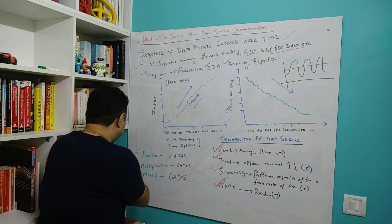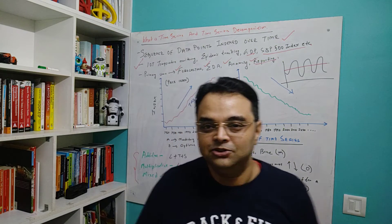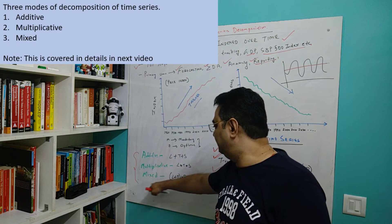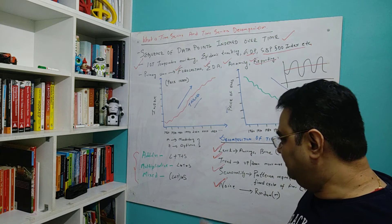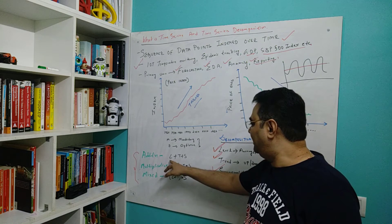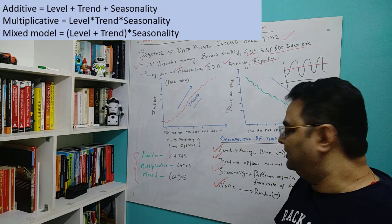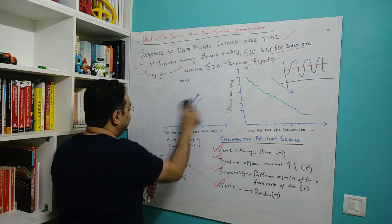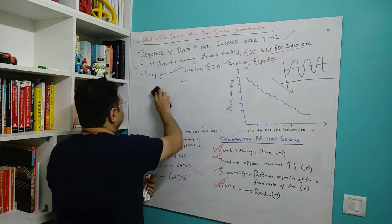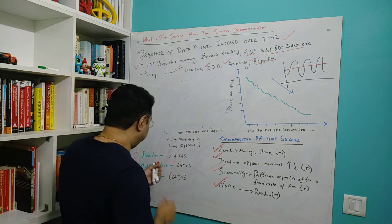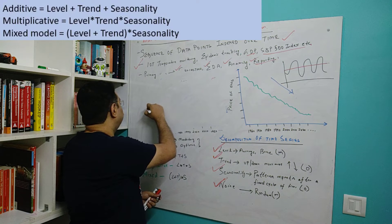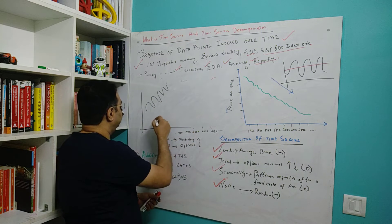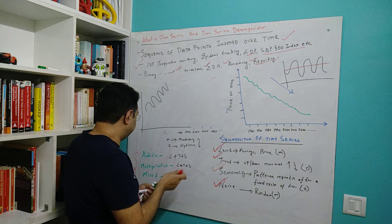At least let me give you the intuition. I'll go into the details of these three types of models in the next video. They are additive, multiplicative, and mixed models in time series. An additive model happens when you add the level, trend, and seasonality of the time series. This kind of time series looks something like this. If you are drawing an additive time series, it will look something like this. Suppose you have the data points.